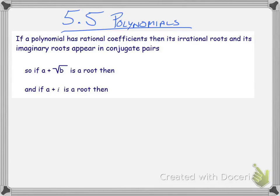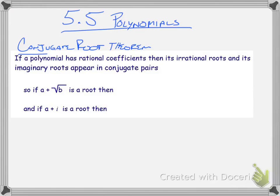Okay, continuing on with 5.5, we have the conjugate root theorem. What the conjugate root theorem says is that if a polynomial has rational coefficients, well, all the ones we're going to be looking at are going to have rational coefficients, so that part don't pay too much attention to.